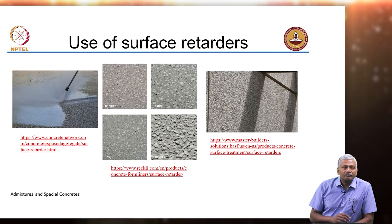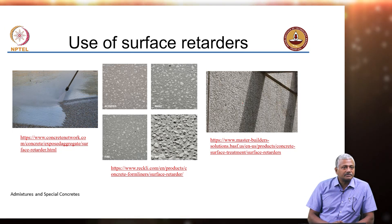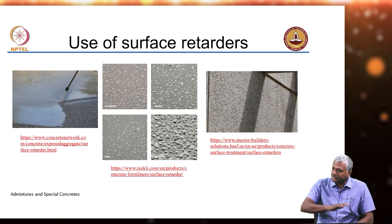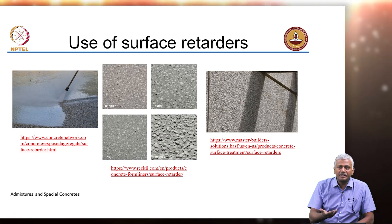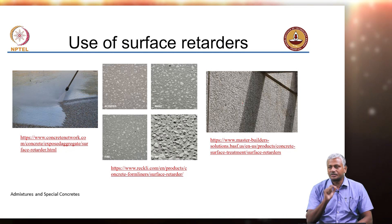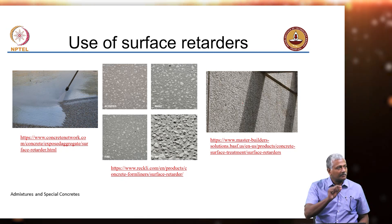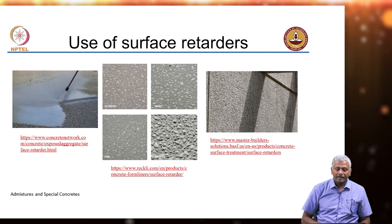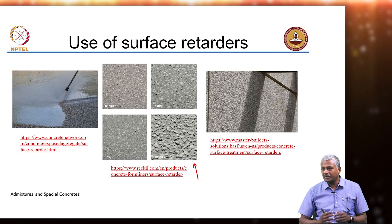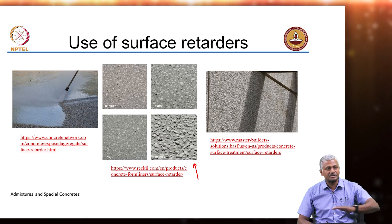In some applications we want to give texture to a concrete surface — an exposed aggregate finish for aesthetic purposes. In such cases, surface retarders are used. After the concrete has been placed and finished, these surface retarders are sprayed onto the surface after a few minutes. Only the surface cement does not set; once the interior concrete has set, a water jet is used to remove the unset cement paste from the surface, exposing the aggregate and giving a nice aesthetic appearance.